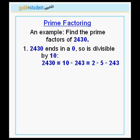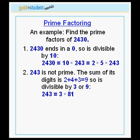2,430 is equal to 10 times 243. And because 10 can be written in terms of its prime factors as 2 times 5, we can write 2,430 as 2 times 5 times 243. 243 is not prime. The sum of its digits is 2 plus 4 plus 3 equals 9, therefore 243 is divisible both by 3 and by 9.